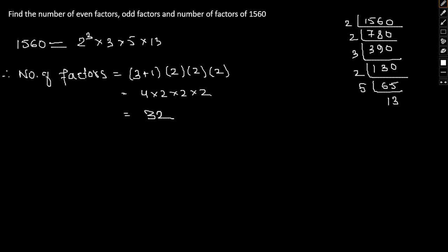32. So we have 32 number of factors. Now we are supposed to find a number of odd factors.